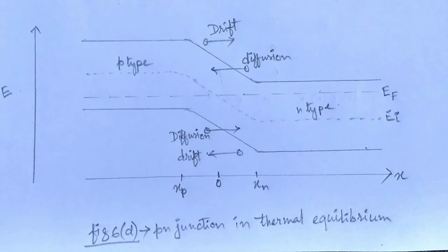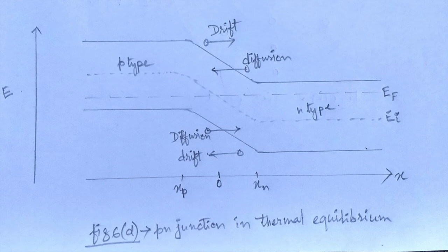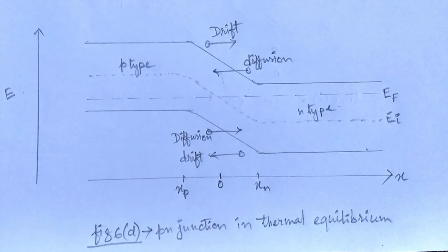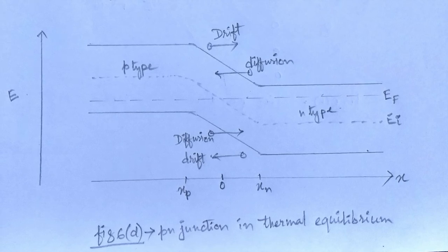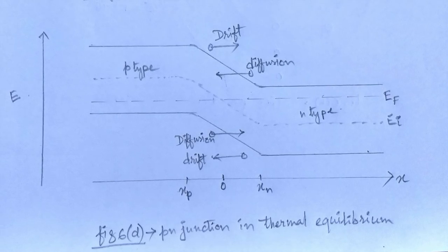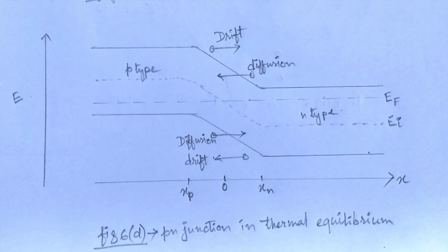Since the built-in potential of a diode is determined by the difference in Fermi level in the P-type and N-type regions, with increase in temperature, the Fermi level moves more closer to the middle of the band gap, and the built-in potential is decreased.